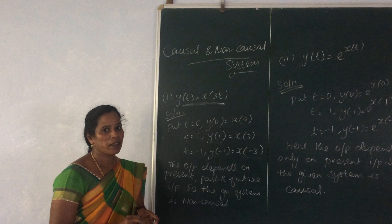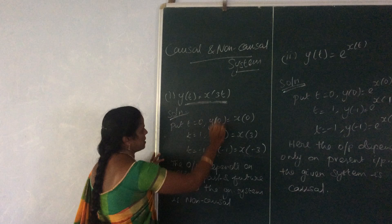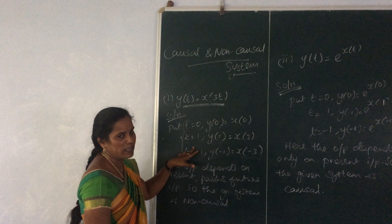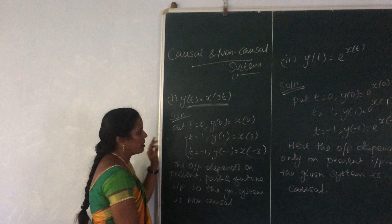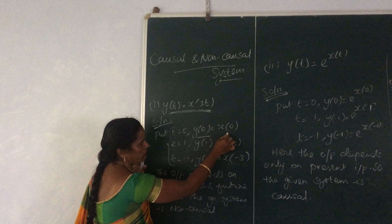We will see the first problem: y(t) = 3x(3t). If our problem is given, we find the output at 3 time instances — one at t = 0, another for a positive instant, and another for a negative instant. When t = 0, we find y(0). y(0) = x(0), so the output at the present instant depends upon the present input.